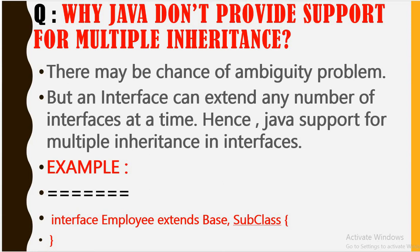There may be a chance of an ambiguity problem, but that is not possible in the case of classes. However, an interface can extend any number of interfaces at a time, hence Java supports multiple inheritance in interfaces. For example, we have one interface 'Employee' that can extend multiple interfaces like 'Base' and 'SubClass,' and multiple inheritance is possible in the case of interfaces in Java.